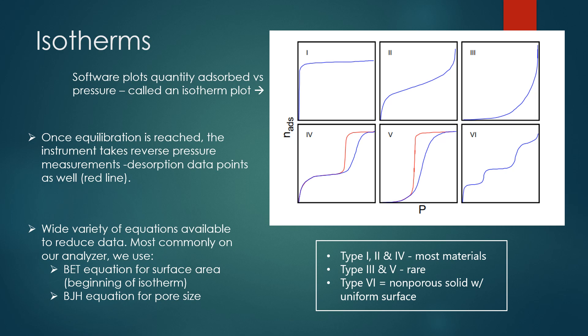These different types of isotherms are determined by how the material is physically characterized. Type 1, 2, and 4 are what we see most often. Type 3 and 5 are very rare, and Type 6 is a non-porous solid with uniform surface, which is also very rare. The two most common types of data reduction equations we use are the BET equation for surface area and the BJH equation for pore size, but there's actually a wide range of data reduction techniques you can use to deduce data in a variety of ways.